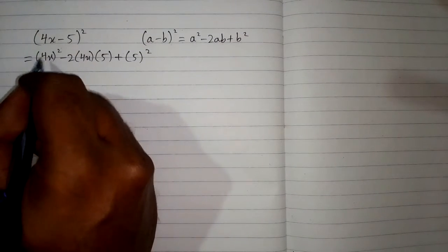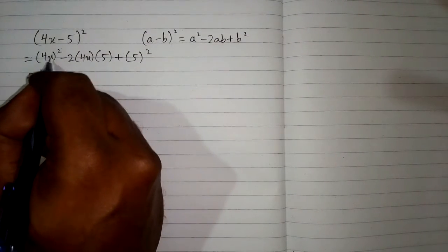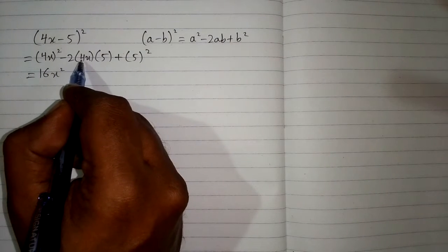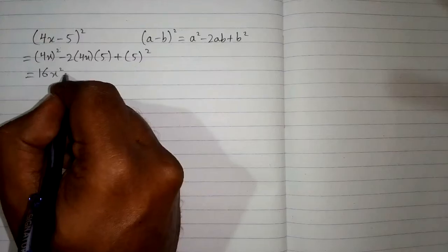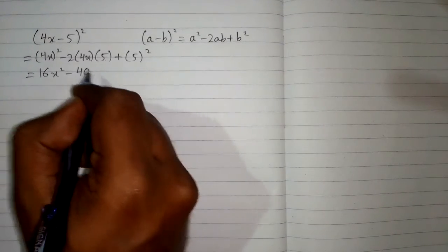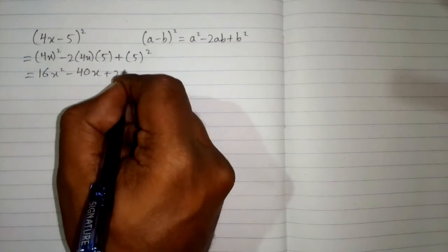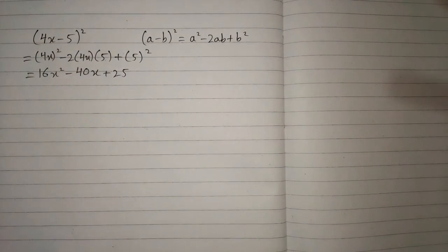Now square of 4 is 16 and square of x is x square, then 2 times 4 is 8 and 8 times 5 is 40. So we have minus 40x plus square of 5 is 25, and this is the required answer.